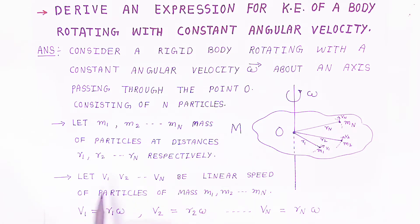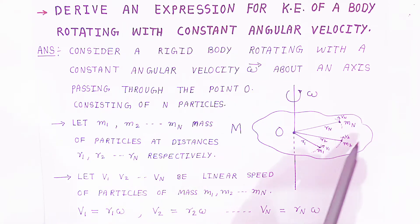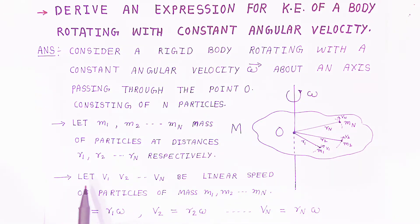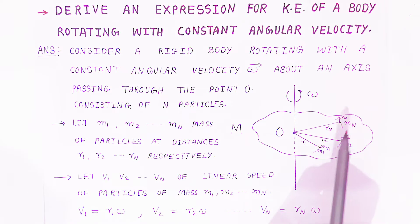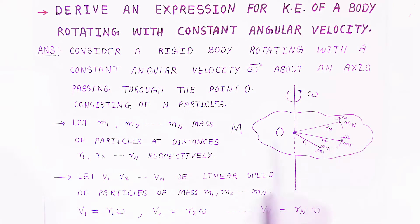We are going to consider the velocity of each and every particle present on this irregular body. Let v1, v2, and vn be the linear speed of particles of mass m1, m2, and mn respectively.